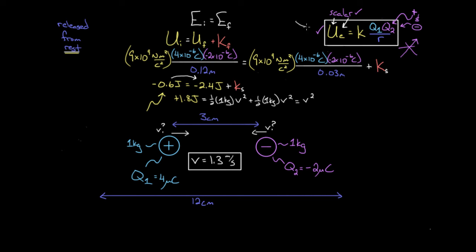So recapping: the formula for the electric potential energy between two charges is KQ1Q2 over R. Since the energy is a scalar, you can plug in those negative signs to tell you if the potential energy is positive or negative. Since this is energy, you can use it in conservation of energy. It's possible for systems to have negative electric potential energy, and those systems can still convert energy into kinetic energy — they just have to make their electric potential energy become even more negative.